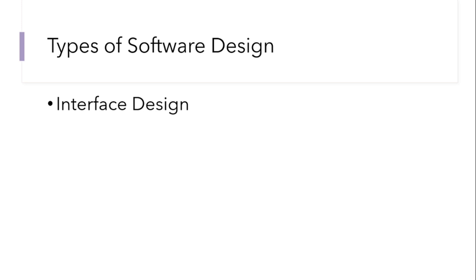The next type is interface design. This looks at the various interfaces that should come as part of the software. For example, the software will have a login screen — how should it be designed, how should it look, what colors should be used? The interface design focuses on the visual appearance of the software.